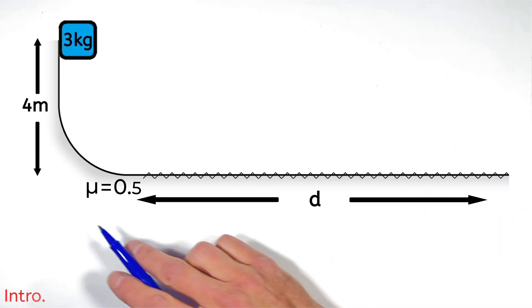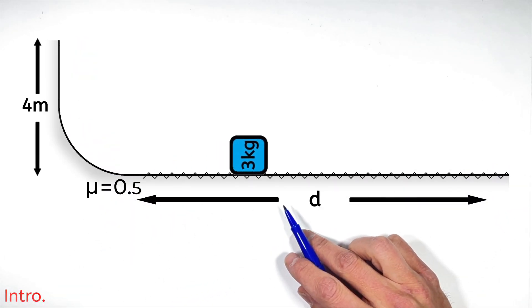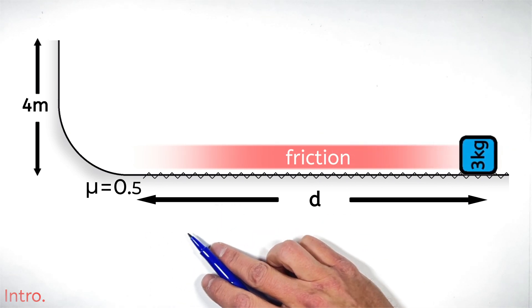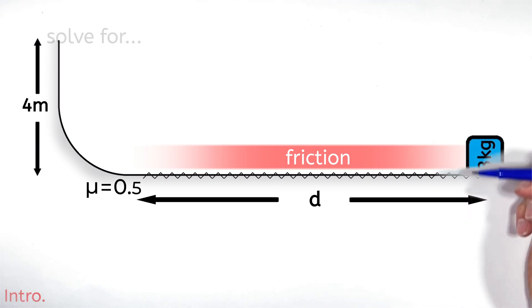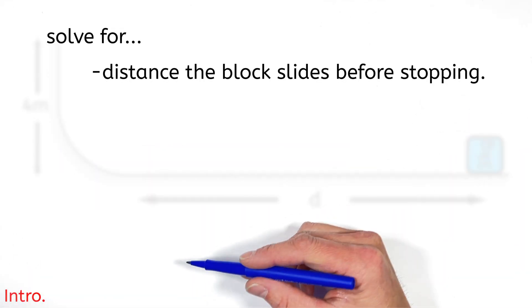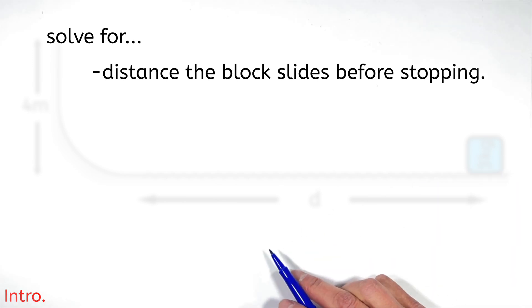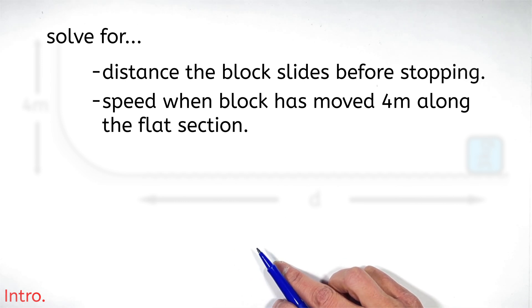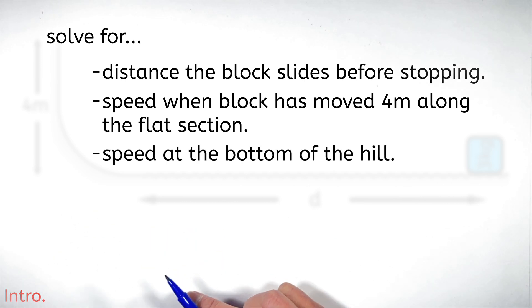Here we're looking at a block which slides down a smooth ramp to a flat surface. There's friction between this block and the flat surface so that eventually the block is going to skid to a stop. Today we're going to solve for three things: the total distance the block skids along this flat surface before stopping, the velocity of the block when it's traveled only partway across the rough surface, and the velocity of the block at the bottom of the hill.